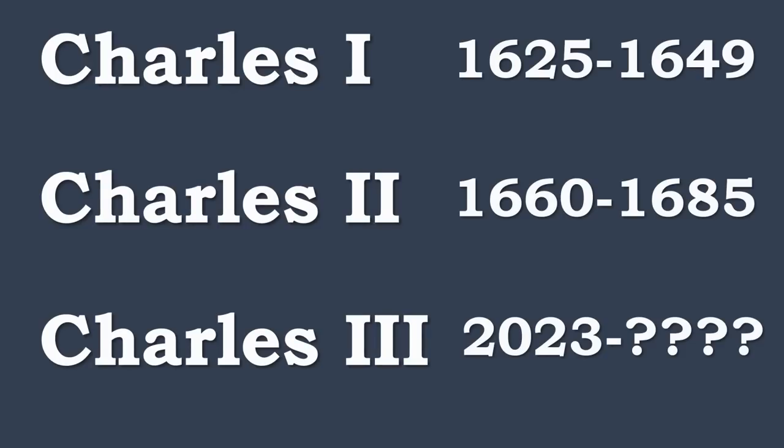Charles III has two namesakes in the past, which obviously are Charles I and Charles II. Charles I ruled from 1625 to 1649. Charles II, his son, ruled from 1660 to 1685. And Charles III will rule from 2023, and we don't know until exactly when. So let's start off with the name Charles itself. The etymology of Charles actually comes from an old English word that simply meant 'man'. It's also found in the word 'churl', although that obviously has more boorish connotations than the more royal-sounding Charles.